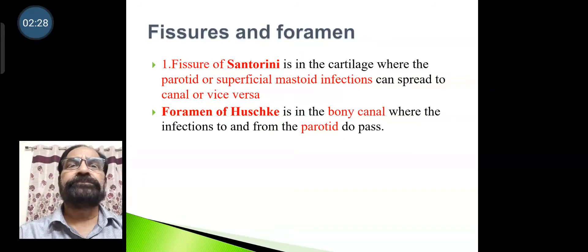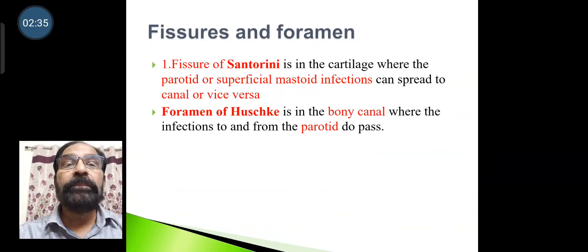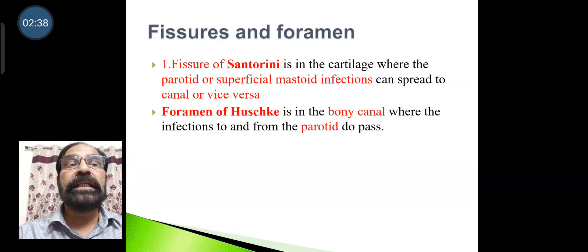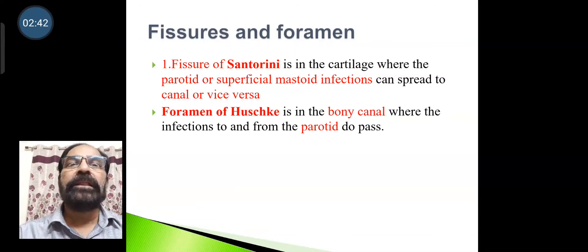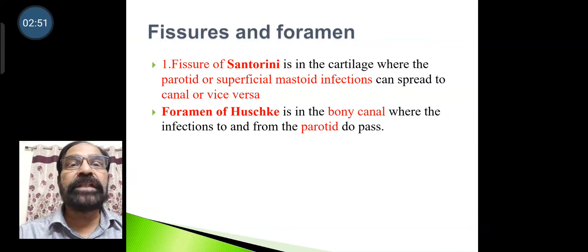Fissures and foramina: There is the fissure of Santorini in the cartilage, where parotid and superficial mastoid infections can spread to the canal and vice versa. There is also the foramen of Huschke in the bony canal, where infections to and from the parotid can pass.